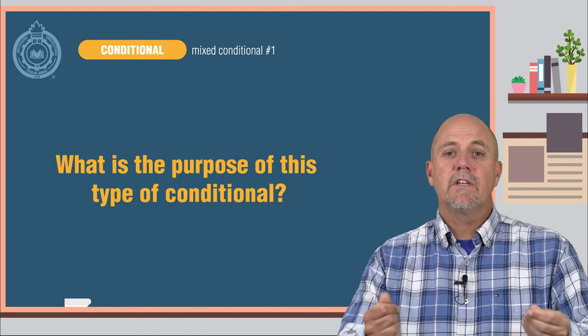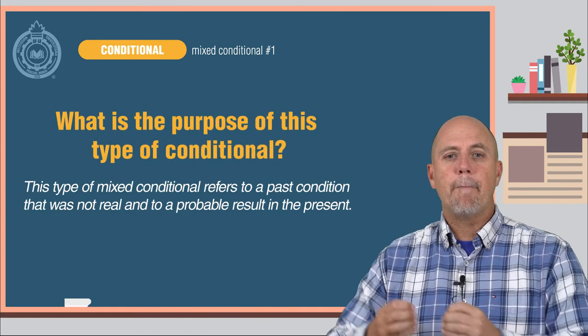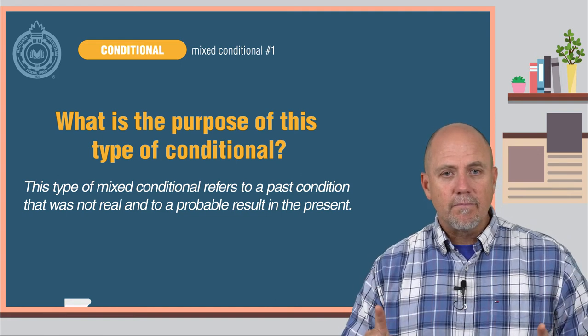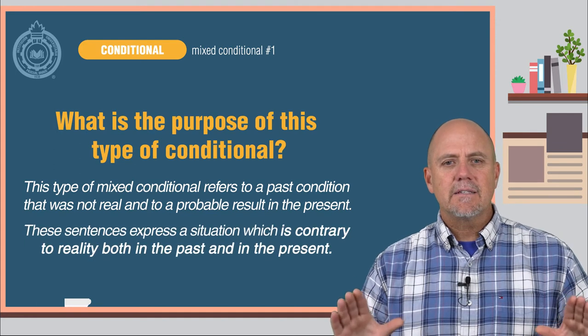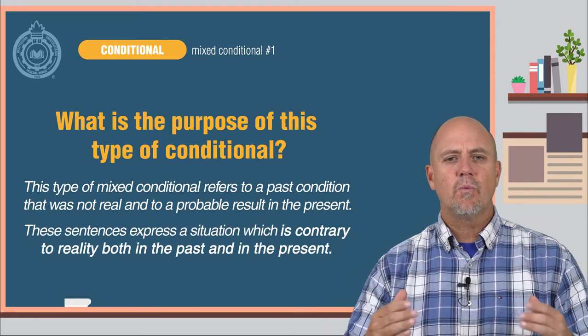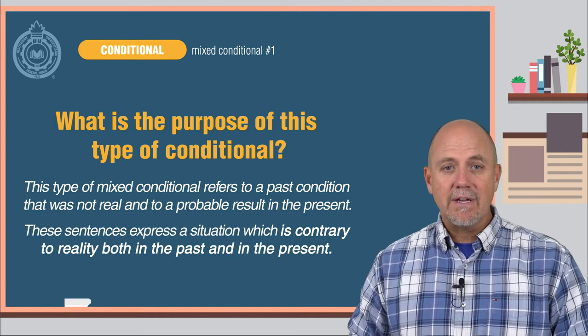What is the purpose of this type of conditional? This type of mixed conditional refers to a past condition that was not real and to a probable result in the present. These sentences express a situation which is contrary to reality, both in the past and in the present.